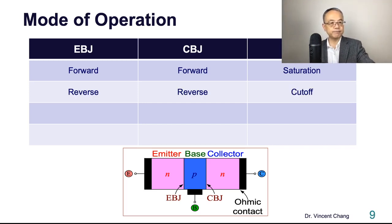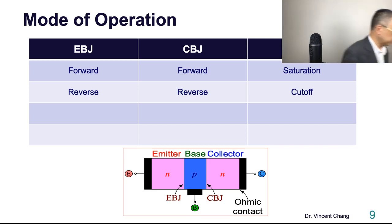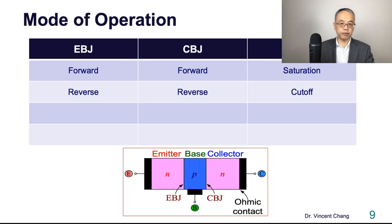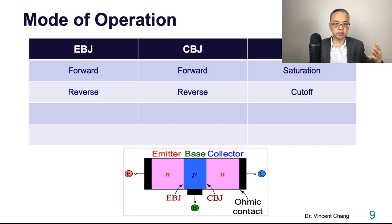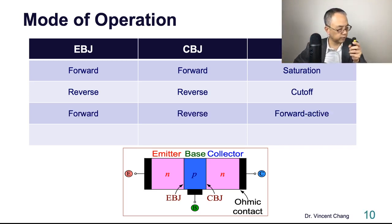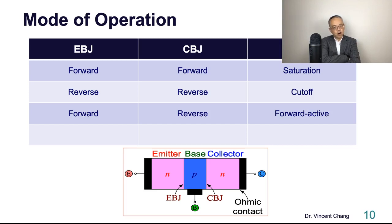The second mode of operation is when the emitter base junction is reverse biased and the collector base junction is also reverse biased. When both junctions are reverse biased, there is no current — this is called cut-off. The third mode, and the most interesting one, is when the emitter base junction is forward biased and the collector base junction is reverse biased; this is called forward active mode.